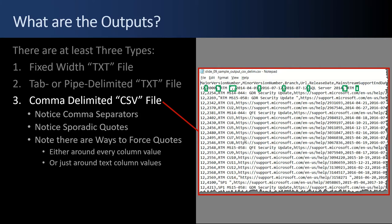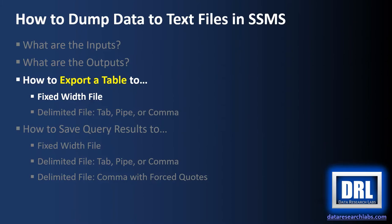What's happening is that SQL Server, when there's a trailing space, adds quotes so the trailing space doesn't get lost — but you can't control that. Preferably, every column would have quotes on every single row. There is a way to do that: we can force quotes around every column value, or choose to put them only around text column values. We'll see later how to do that.